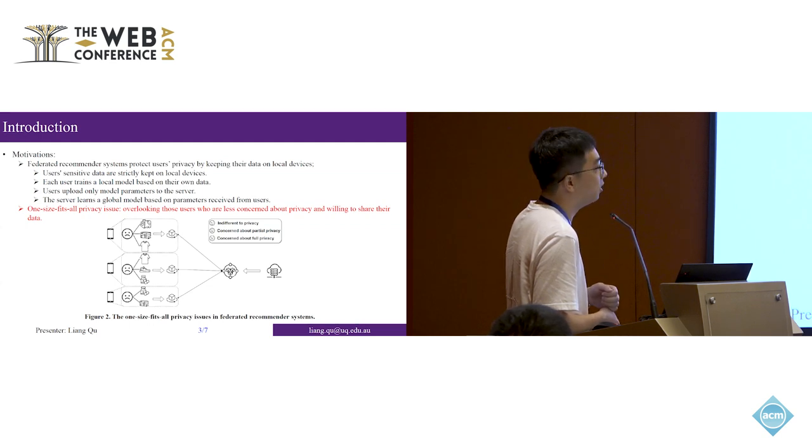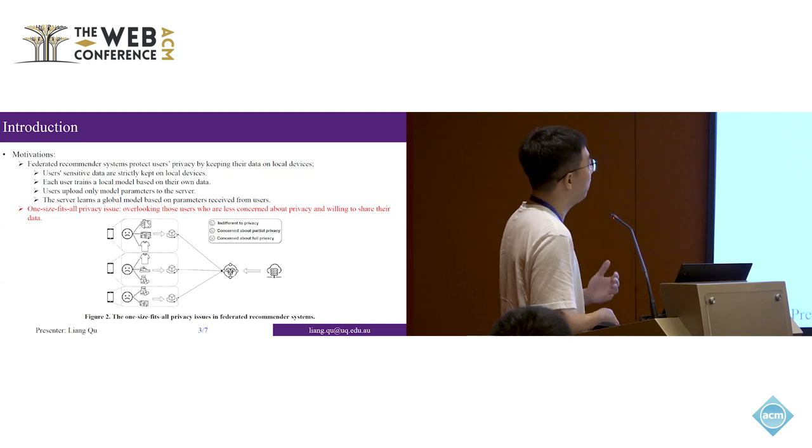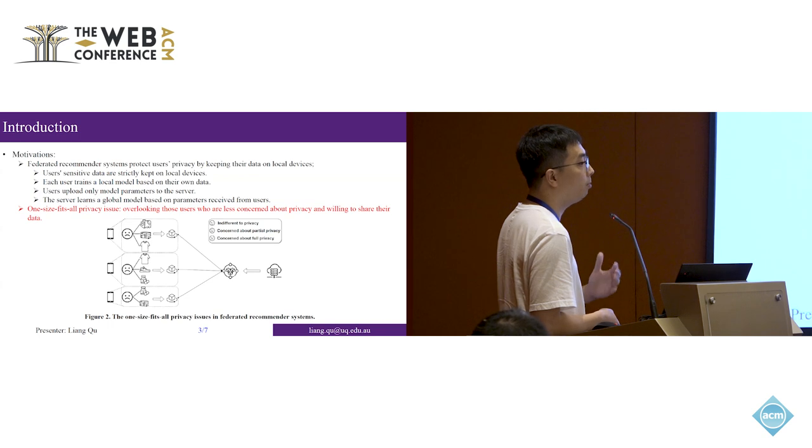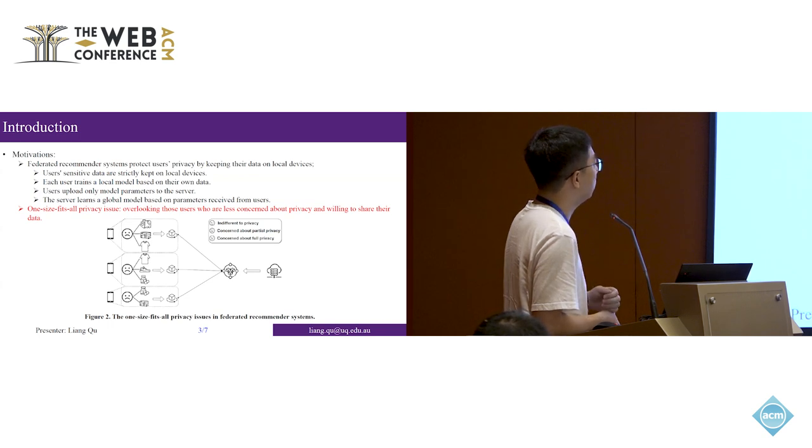This is the first-order graph. To perform the recommendation service, we also deploy a local model on the user's device. We train the local model based on the local data. Only the model parameters or gradients are uploaded to the central server. In this way, we can protect the user's privacy while performing the recommendation service with good performance.